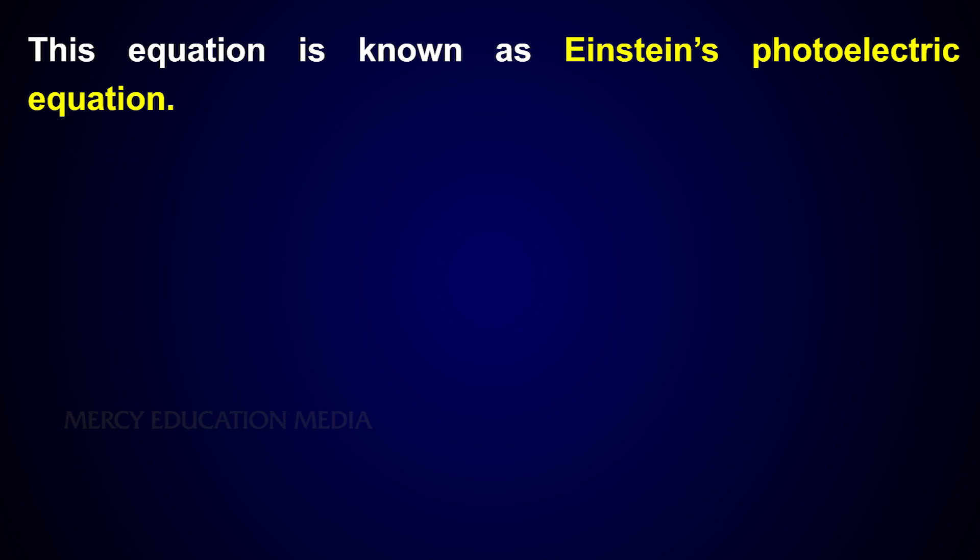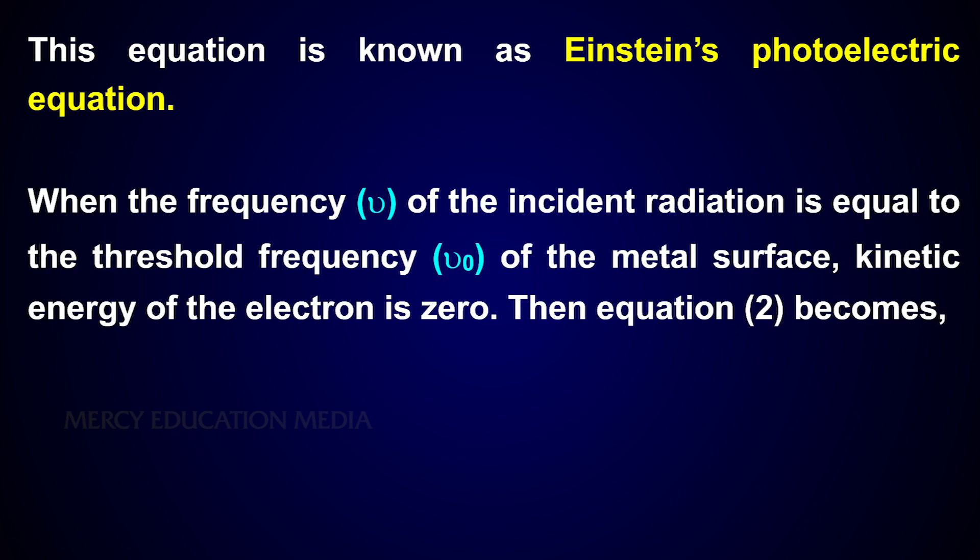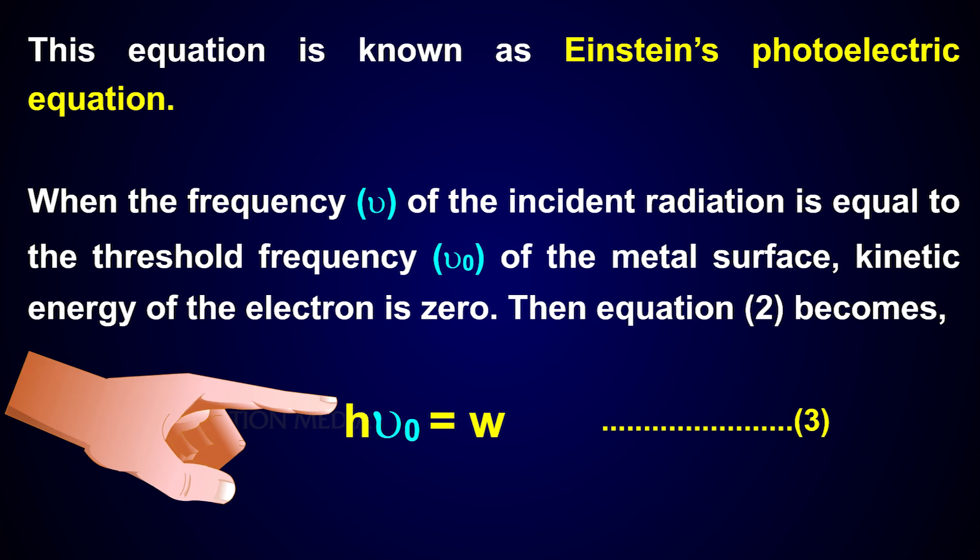This equation is known as Einstein's photoelectric equation. When the frequency ν of the incident radiation is equal to the threshold frequency ν₀ of the metal surface, the kinetic energy of the electron is zero. Then equation 2 becomes hν₀ = W.